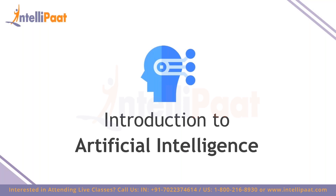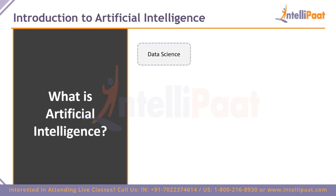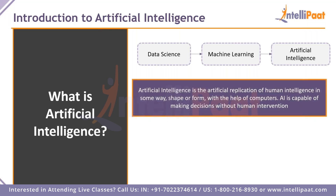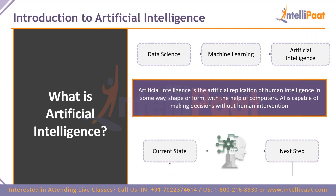Now let's get into artificial intelligence. From data science you extend into machine learning, and from machine learning you can extend into artificial intelligence. Artificial intelligence is the artificial replication of human intelligence — basically mimicking what we would do in certain situations, except without our intervention at all. This could be in the form of robotics in industrial factories, where instead of using human labor to pack boxes, robots are used with some form of artificial intelligence programmed into them.